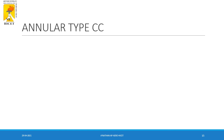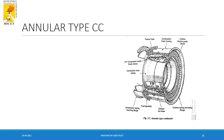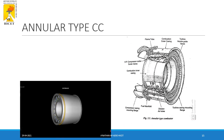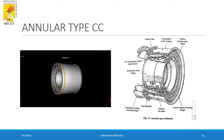The next type is the annular type combustion chamber. In this design, there is one single annulus where multiple fuel injection points and ignition points are present. It burns simply like a burner with a simple design. The weight is less and the pressure loss is also very less.